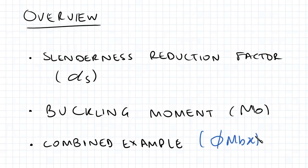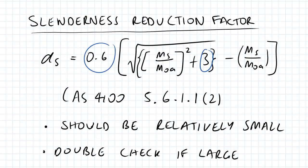The first thing we have here is the slenderness reduction factor, so alpha s equals 0.6 times the square root of Ms over Moa squared plus beta minus Mt over Moa. I've circled these in blue because these are two critical things.